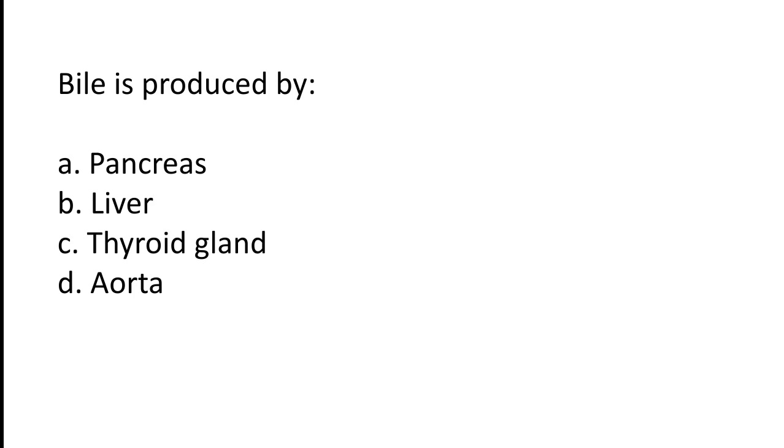Bile is produced by: A) pancreas, B) liver, C) thyroid gland, D) aorta. The correct answer is option B — liver.